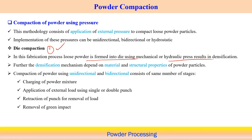Whether compaction is unidirectional or bidirectional, the stages are the same. First is charging of the powder mixture; second is application of external load using single or double punch; then retraction of the punch to remove the load; and finally removal of the green compact from the die.